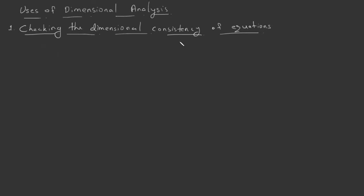We know each equation consists of many terms which are separated by equal, plus, or minus signs. For example, one of the equations of motion is s equals ut plus half at squared, so it consists of three terms: s, ut, and half at squared. The dimensional consistency says that dimensions of all the terms in an equation must be identical.